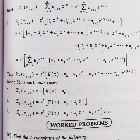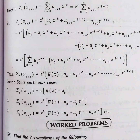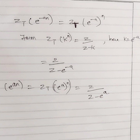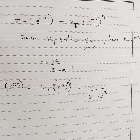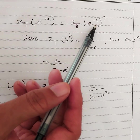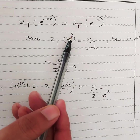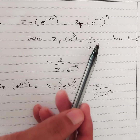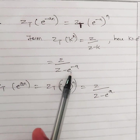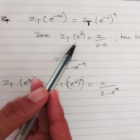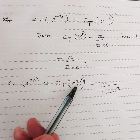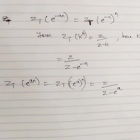We have learnt left and right shifting rules. Now some warm-up problems. If they ask z-transform of e^(-an), we write e^(-a)^n, which is of the form z-transform of k^n, formula z/(z-k). In the place of k we have e^(-a), so the answer is z/(z - e^(-a)). Similarly, z-transform of e^(an) = z/(z - e^a).